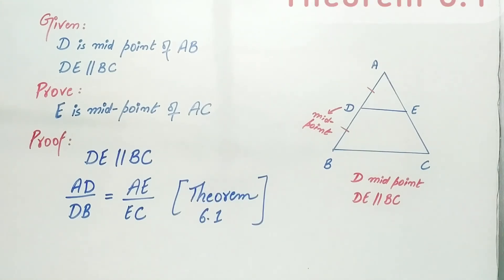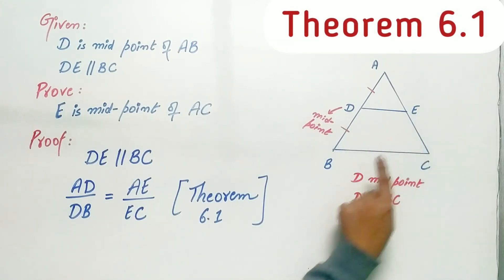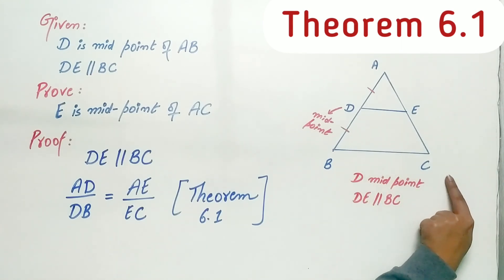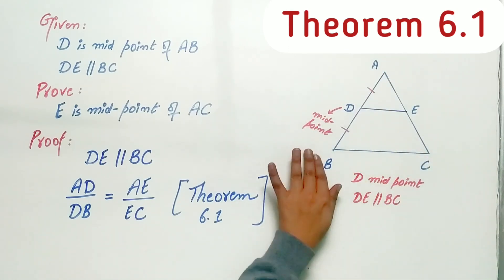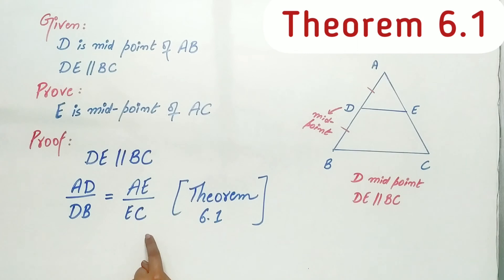It says DE is a line that is parallel to BC, another side of the triangle. Hence, the other two sides except BC are divided in the same ratio.